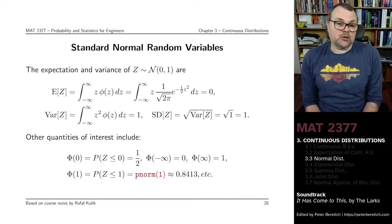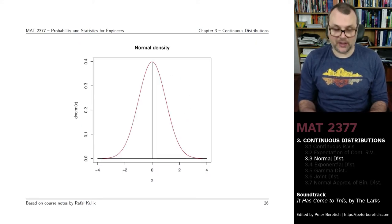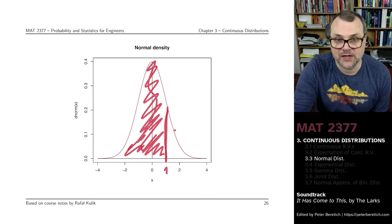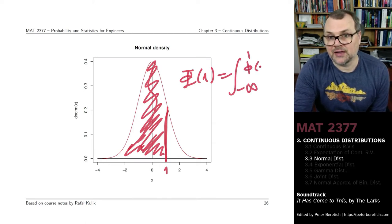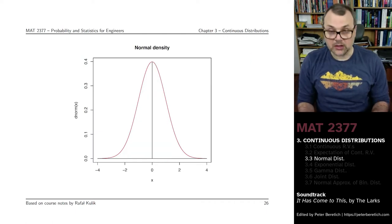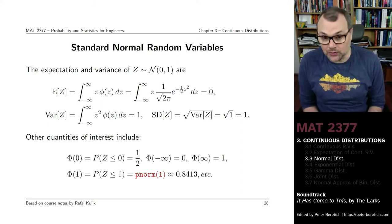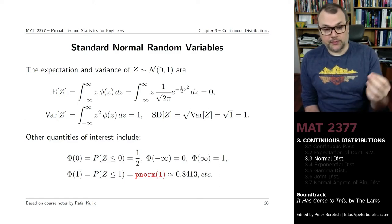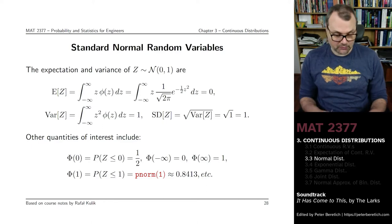If you want to compute the cumulative distribution function at 1 — that is, the probability that your random variable is smaller than or equal to 1 — you need that specific area. Given that we cannot compute it directly because we don't have a simple analytical form for the CDF, how do we come up with a value? Well, you can use tables, or you can use R or other statistical software. In R, you compute this by calling pnorm(1), which gives you about 84.13%.